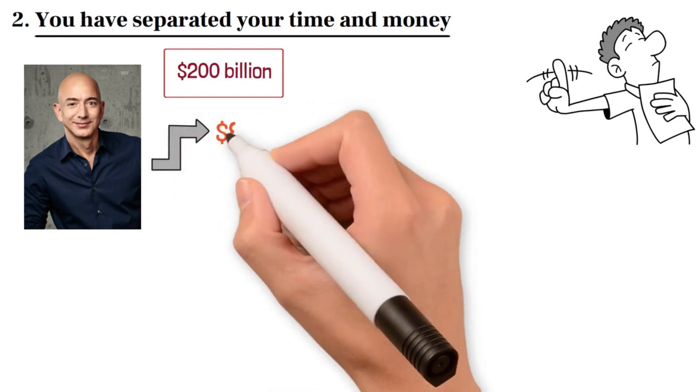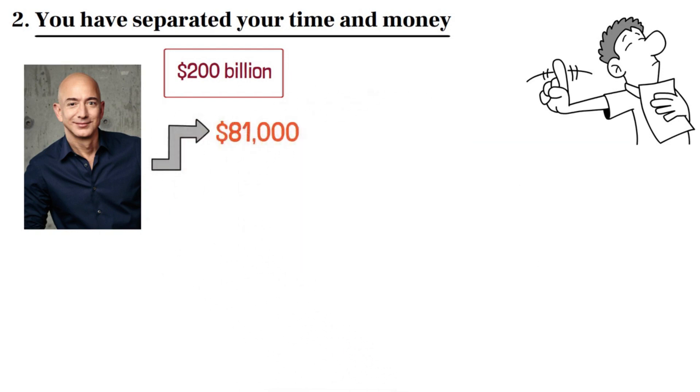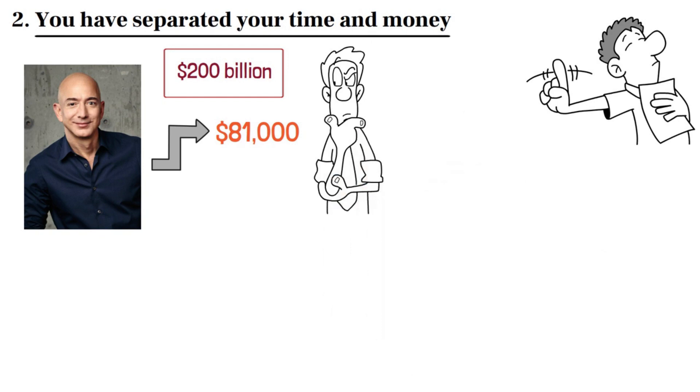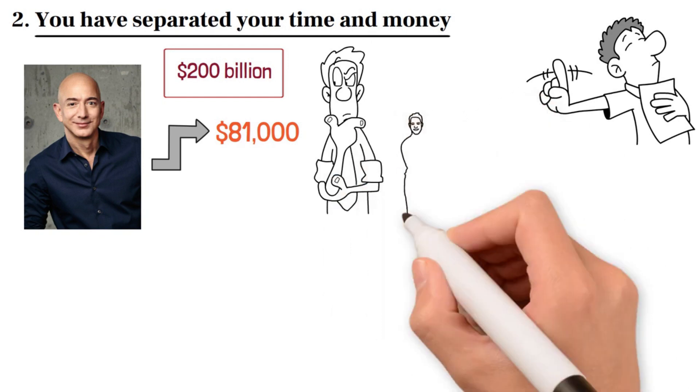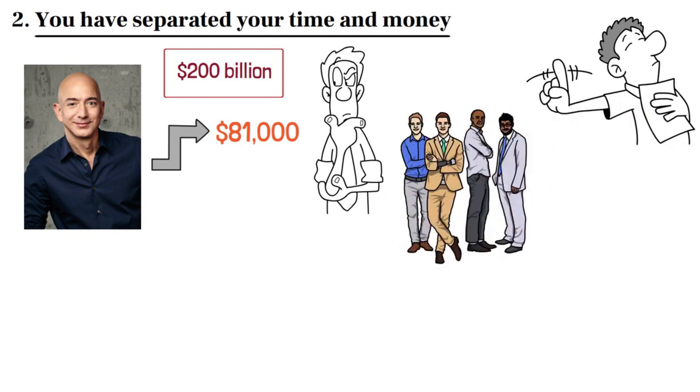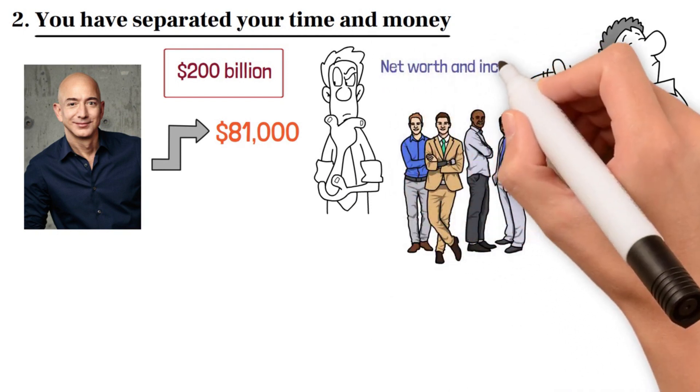His annual income is slightly more than $81,000. Bezos barely makes six digits. You must be wondering how is this even possible? This is not unique to Jeff Bezos. The majority of the world's wealthiest men are paid very little. Because net worth and income are vastly different.